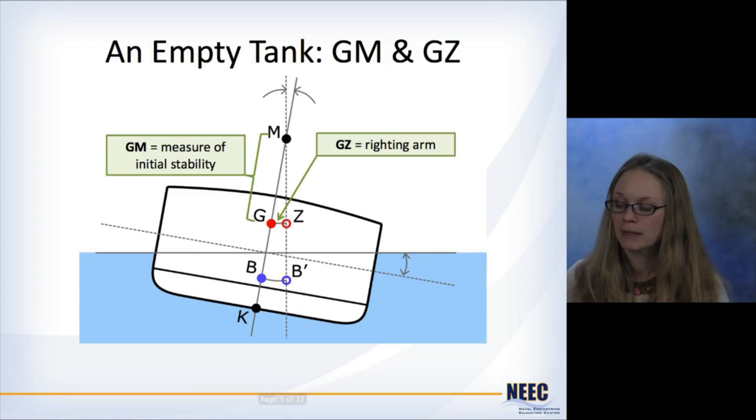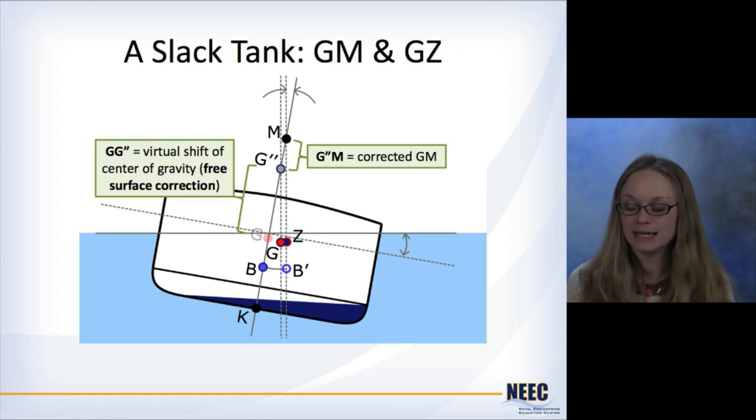Here's what I mean. So GM, if you remember, is the measure of initial stability for our ship, and then GZ is the righting arm. If you put liquid inside a tank on this ship and you tip the ship over, all the liquid is going to slosh over to one side and that's going to change where the center of gravity is, as shown here.